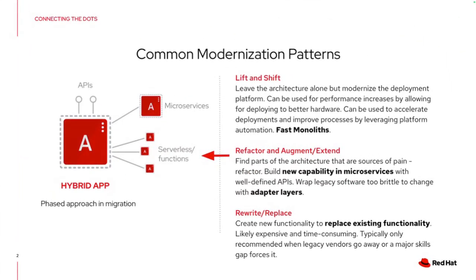We're going to be talking about modernization and why it is important right now. We know that there has been a trend and some shifts in the way we've been developing applications over the last couple of years. It's been almost two decades since microservices — we've seen the door open to Kubernetes, containers, and modern application development. But if you're not a brand new company, you already have a set of assets in your organization that you need to move forward to get the most out of these new paradigms and the benefits of economies of scale.